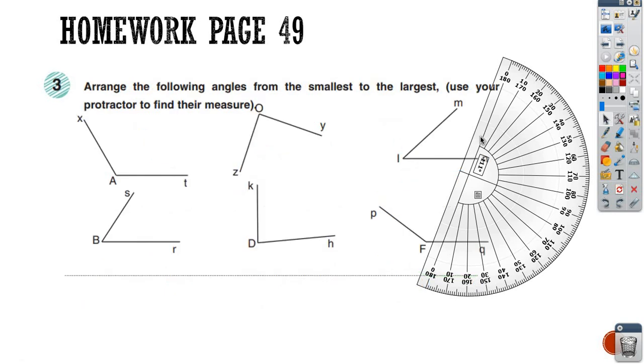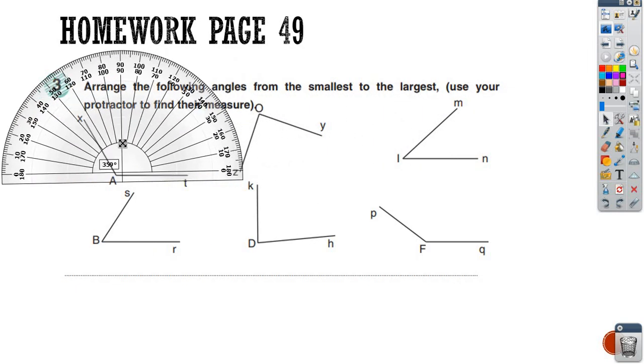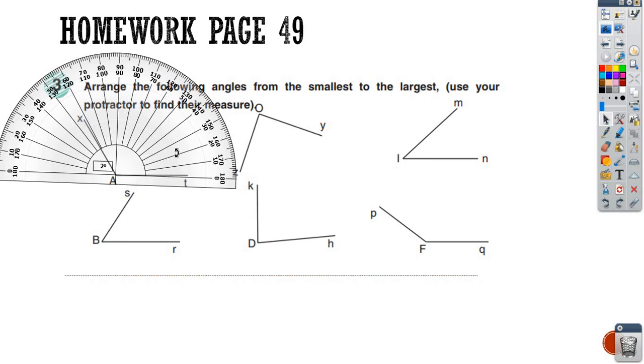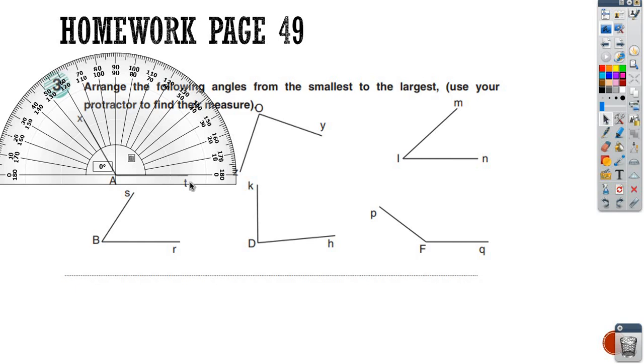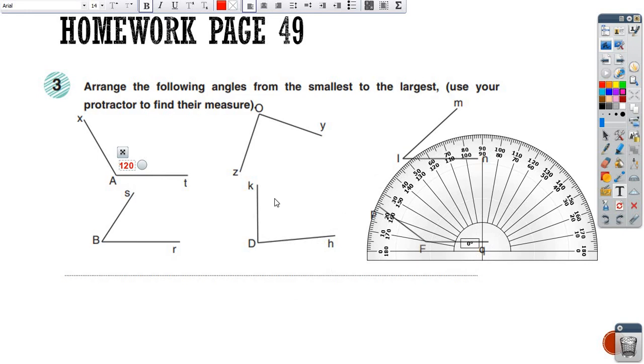Arrange the following angles. I want to arrange the following angles in exercise number 3. How can I arrange them without knowing their measures? Excellent. So first, we have to measure each one. For example, I place it on AT and the center of protractor on the vertex and this side on 0. I start from 0, 10, 20, 30, 40, 50, 60, 70, 80, 90, 100, 110, and 120. So the measure of XAT is 120 degree. So I write here 120 degree. Don't forget to measure the angles first and write a number here. After that, you can arrange them from the smallest to the largest one.